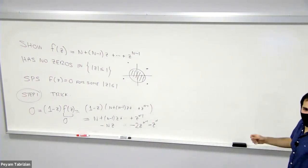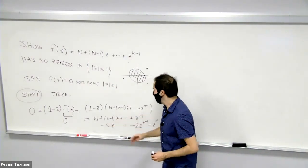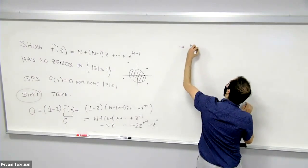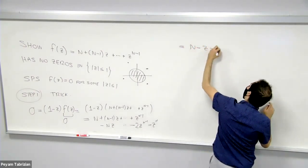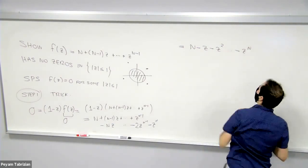And then the beautiful thing is there is this cancellation. So (n-1)z finally canceled off with nz to get n - z. Then the next term actually becomes -z^2 ... up to -z^n.